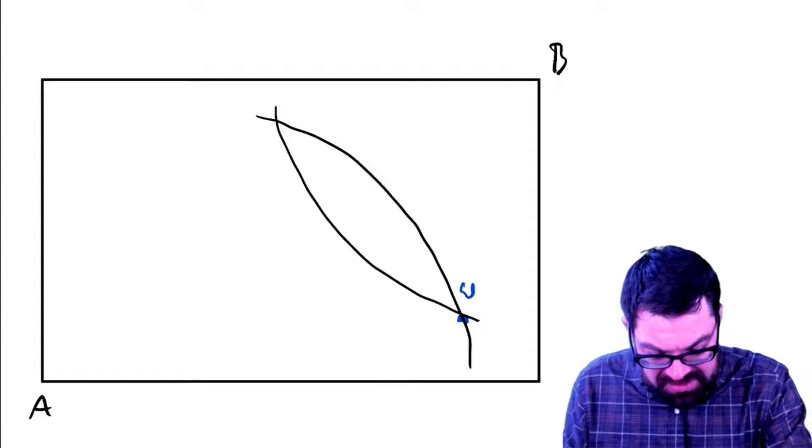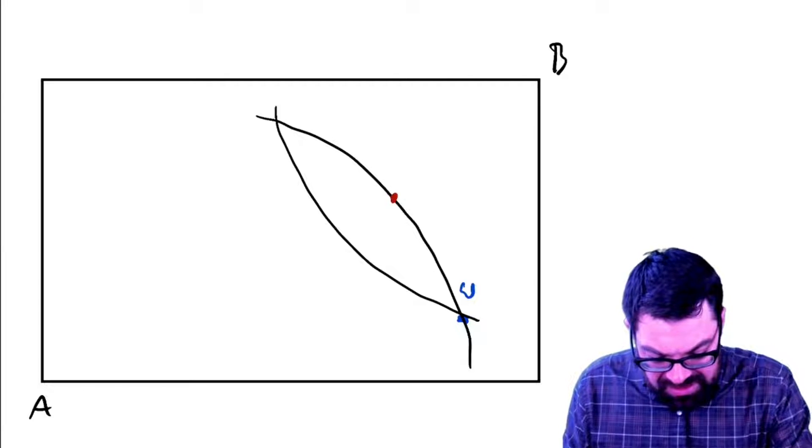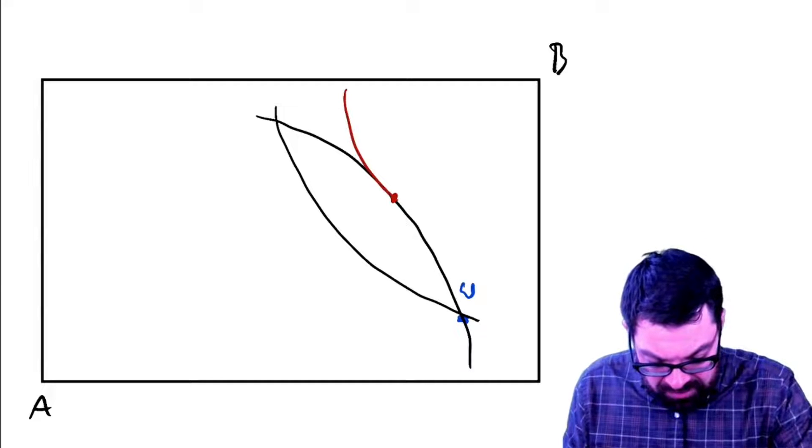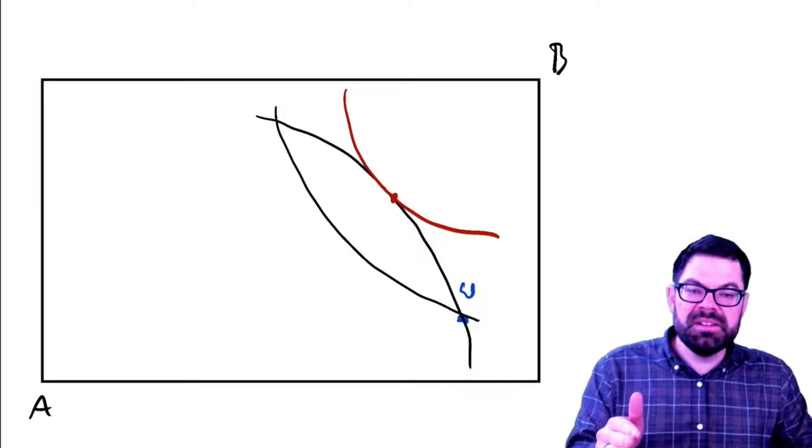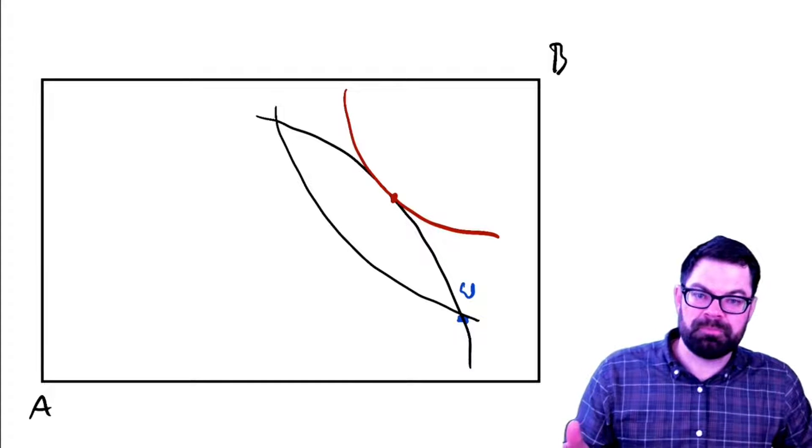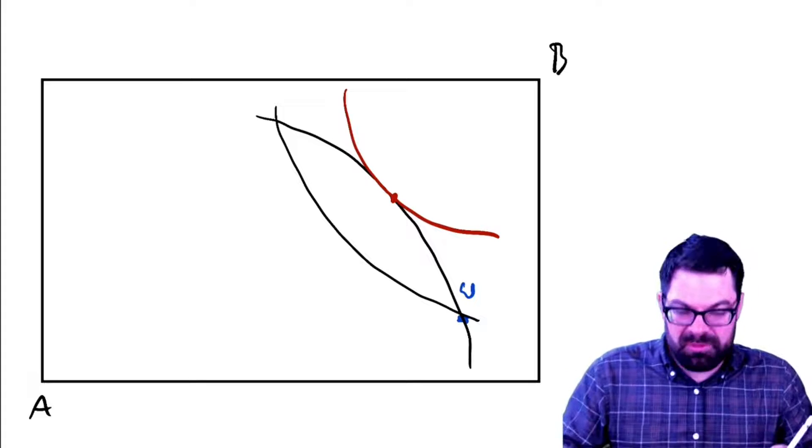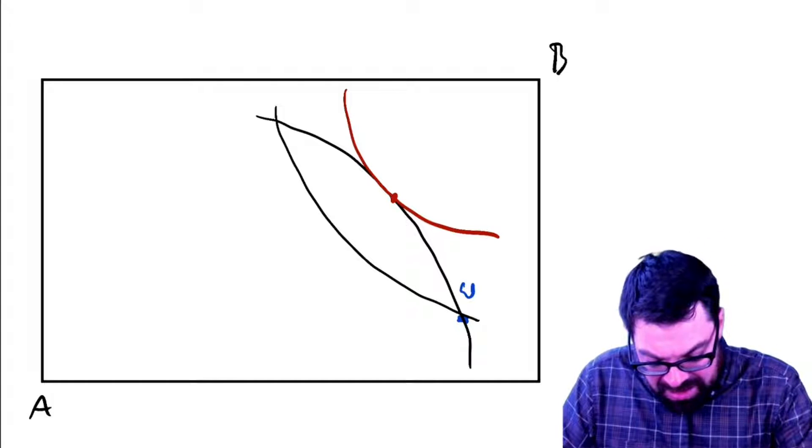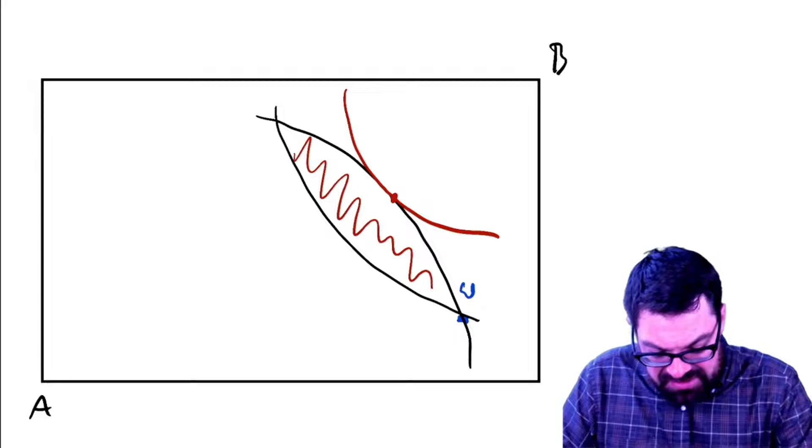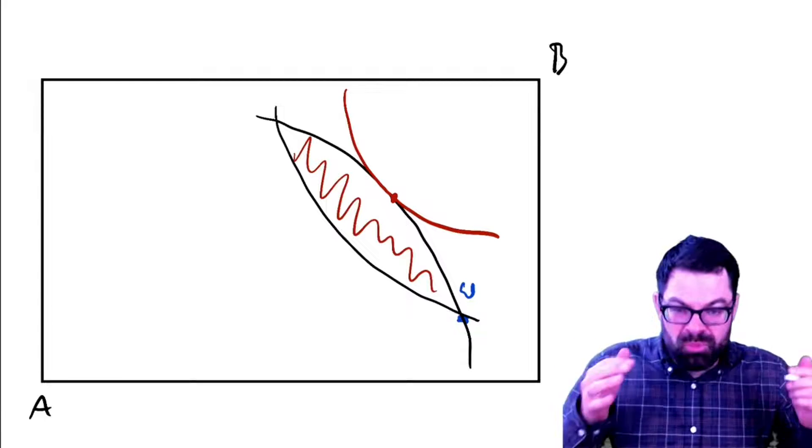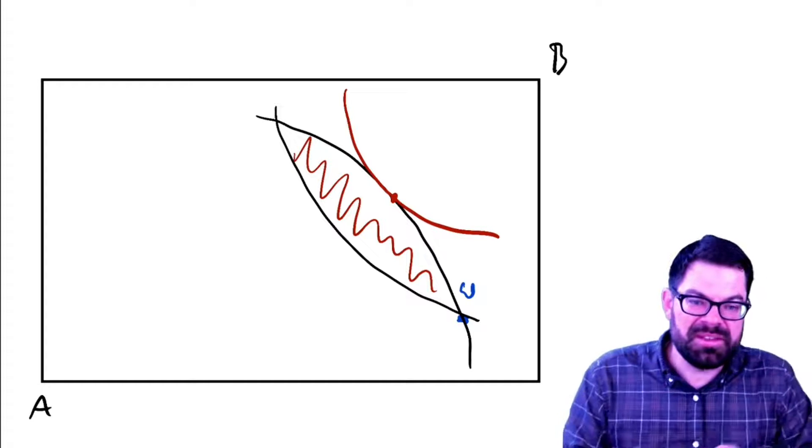and any point within this lens would at least make one person better off. So even if we move, let's say, to a point that is here, that would still make Andrew better off and the utility of Betty would be the same. That's obviously a limiting case, but it would still mean a Pareto improvement. And any point within that lens, we would consider the move to that point a Pareto improvement.